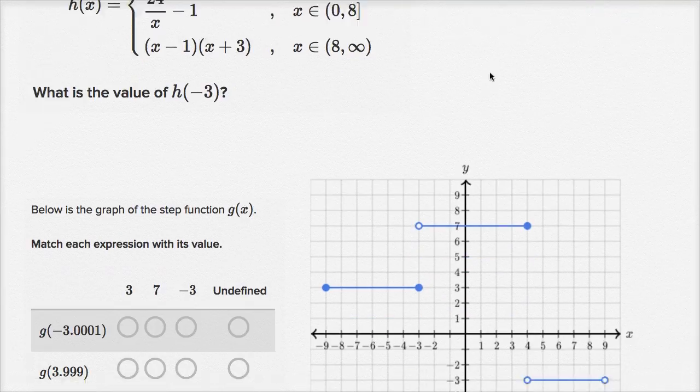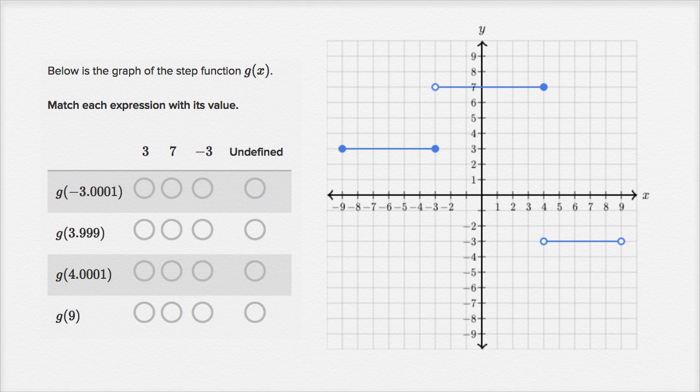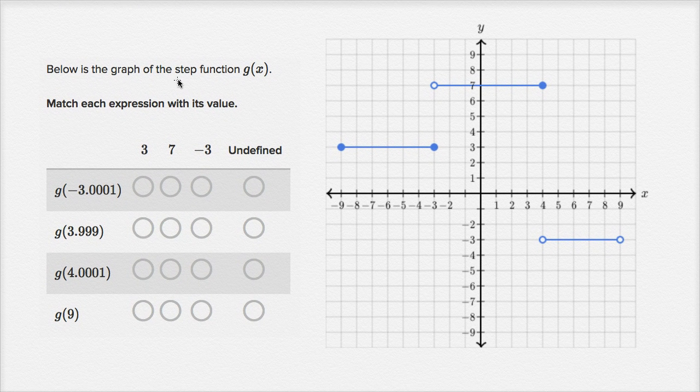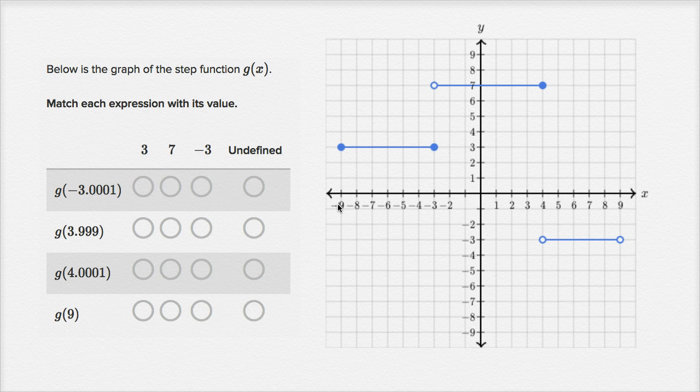Let's do one more example. This one's a little bit different. Below is a graph of the step function g(x). So we can see g(x) right over here. It starts when x equals -9, it's at 3, and then it jumps up, and then it jumps down. Match each expression with its value.